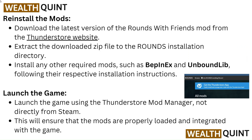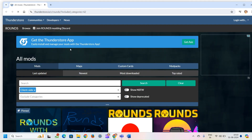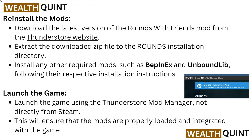Reinstall the mods. Download the latest version of the Rounds with Friends mod from the ThunderStore website. Extract the downloaded zip file to the Rounds installation directory. Install any other required mods such as BepInEx and Unbound following their respective installation instructions. Then launch the game using the ThunderStore Mod Manager, not directly from Steam, to ensure that the mods are properly loaded and integrated with the game.